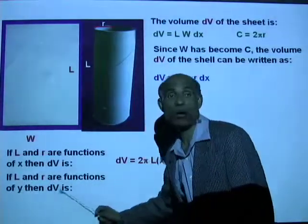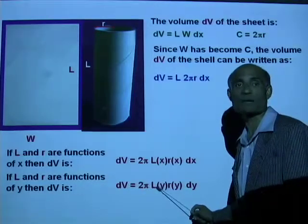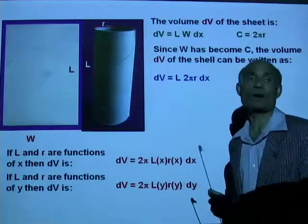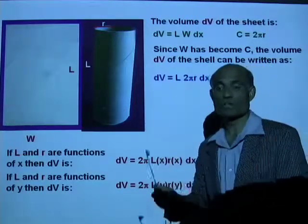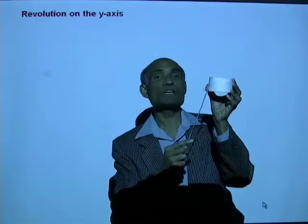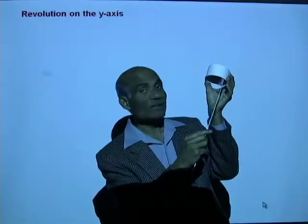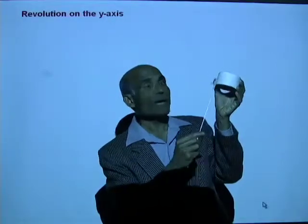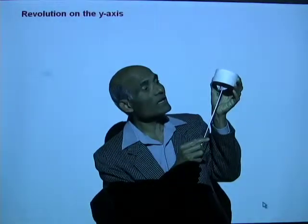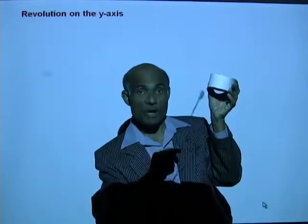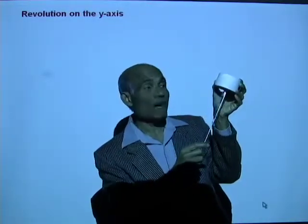If L and R are functions of x, the volume of the shell is 2π times L(x) times R(x) dx. Or, it can be L(y), R(y), dy. Remember this form of the volume dV of the shell — we will be using it as we move on.